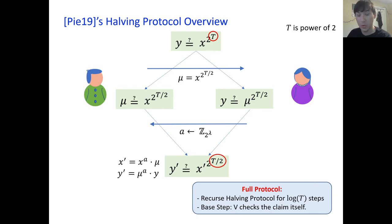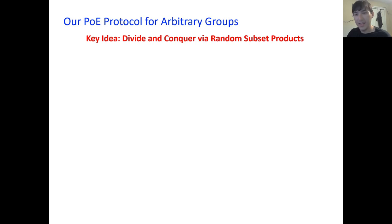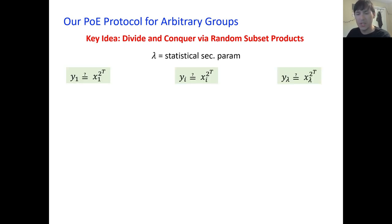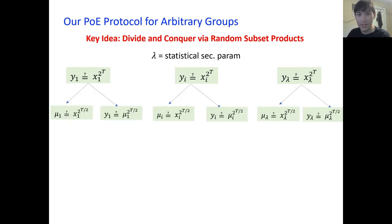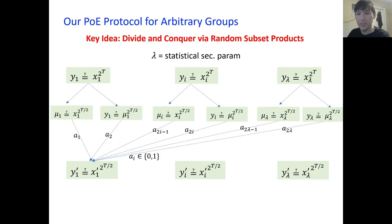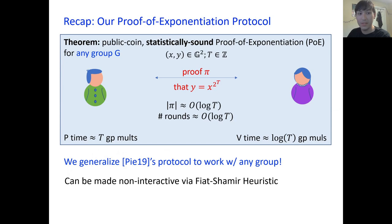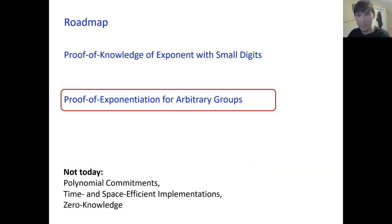For the full protocol, you recurse log T times and the verifier checks the final claim itself. Our PoE uses the same ideas of divide-and-conquer via random subset products that we saw in the proof of knowledge of exponent. We again have a lambda statistical security parameter, lambda different PoE instances, and we do the same halving for each. But our recombination is again via random subset products, where the A_i values are randomly selected bits. I hope you'll trust me when I say that this modification is complete, it is statistically sound, and it works over any group G.